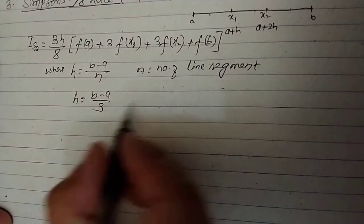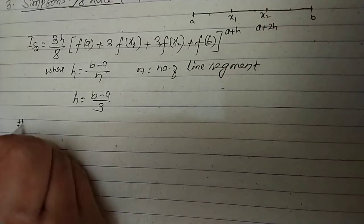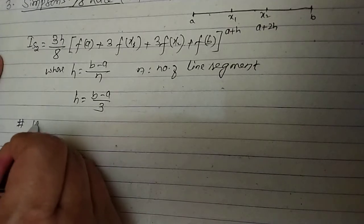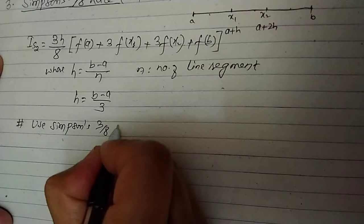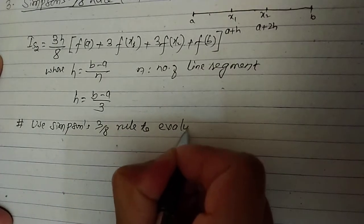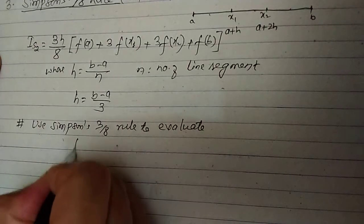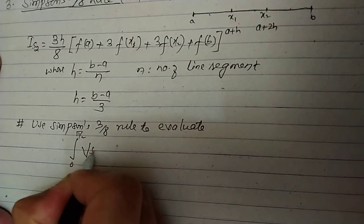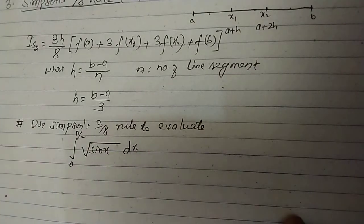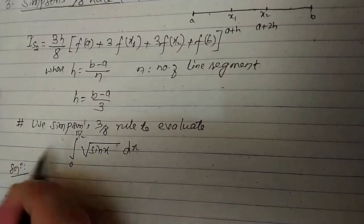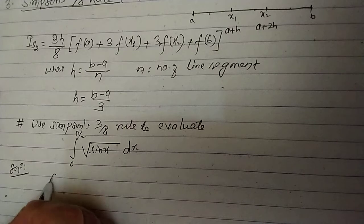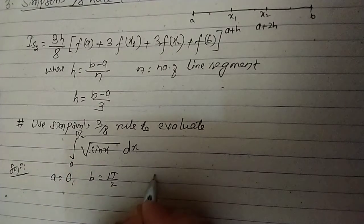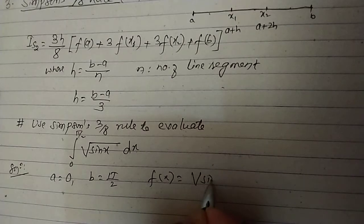Let us evaluate a problem using Simpson's 3/8 rule. Use Simpson's 3/8 rule to evaluate the integration from 0 to π/2 of √(sin x) dx — the same problem previously done with Simpson's 1/3 rule. Here, a equals 0, b equals π/2, and f(x) equals √(sin x).